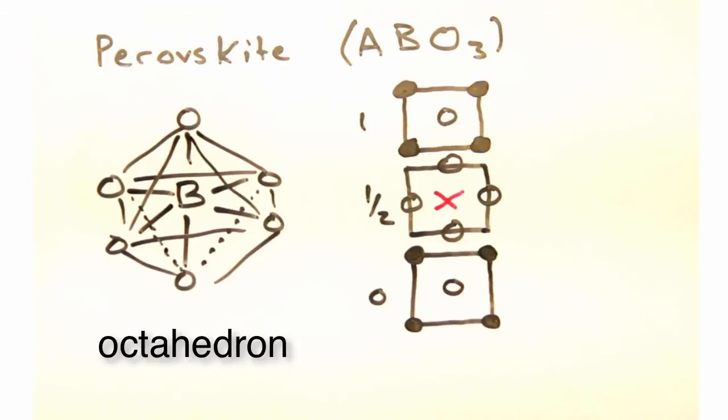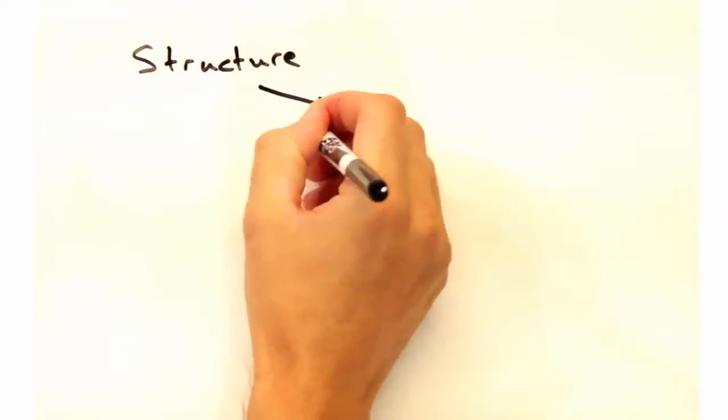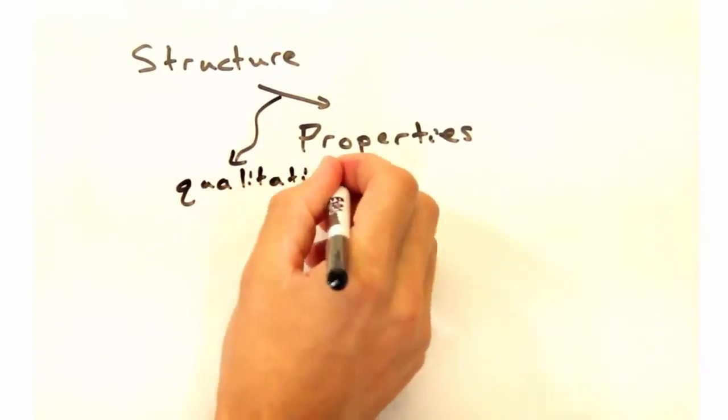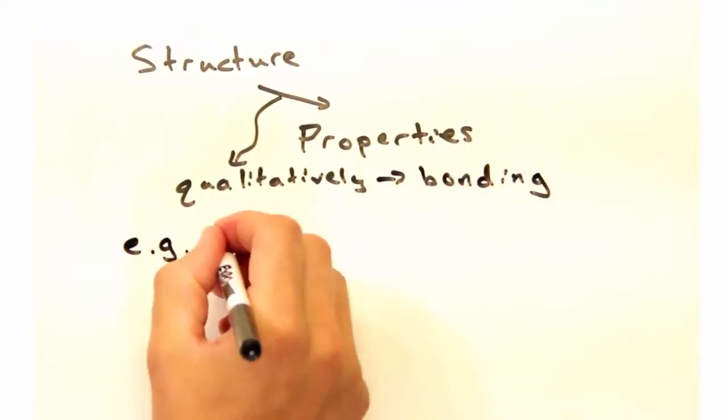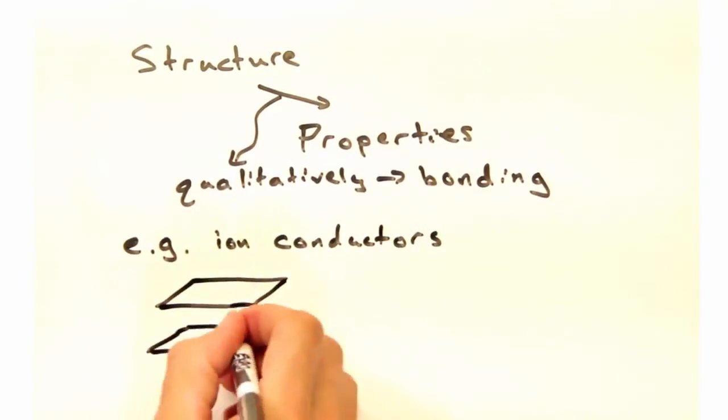You know, it's all well and good to visualize structure, but how does this tell me anything about properties? How we rationalize properties, at least qualitatively, often comes from the type of bonding in a crystal, rather than from first principles calculations.